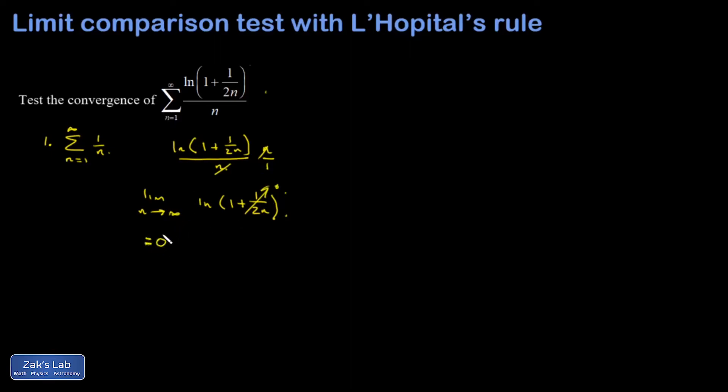Now this actually tells me nothing. Basically, what it's telling me is that the terms in my series are smaller than the terms of a divergent series. Well, that doesn't allow me to conclude anything. It could be infinite or it could be finite.